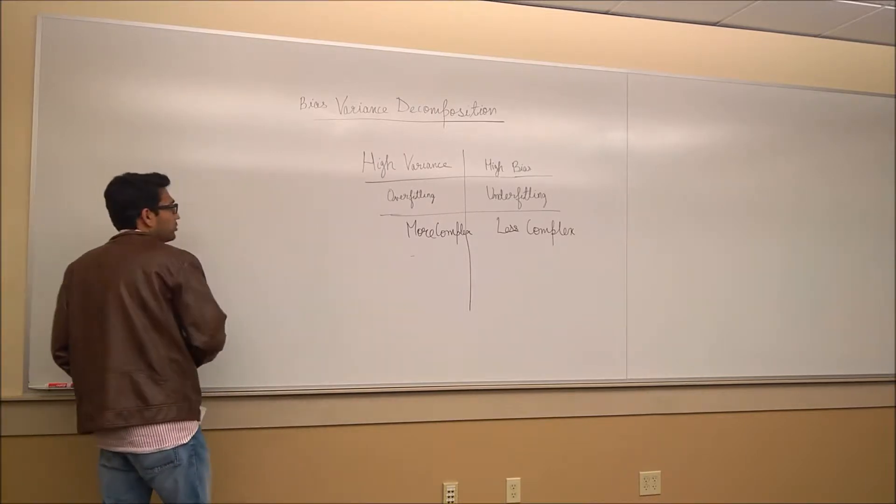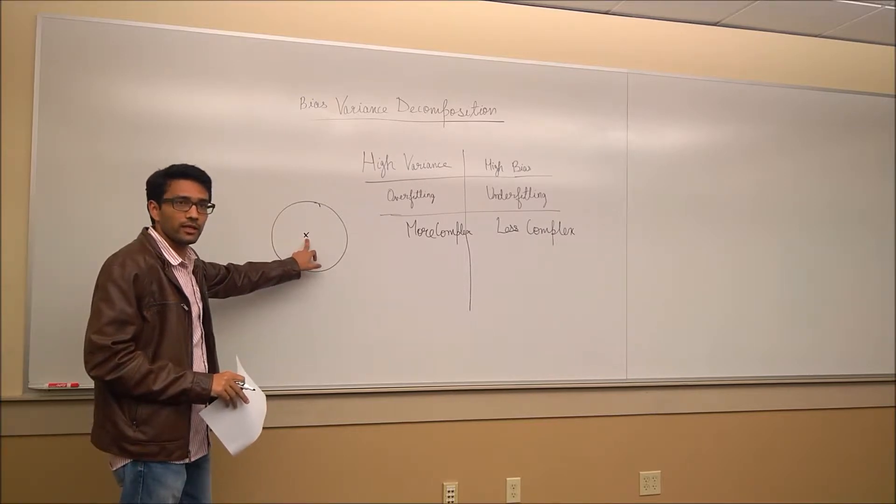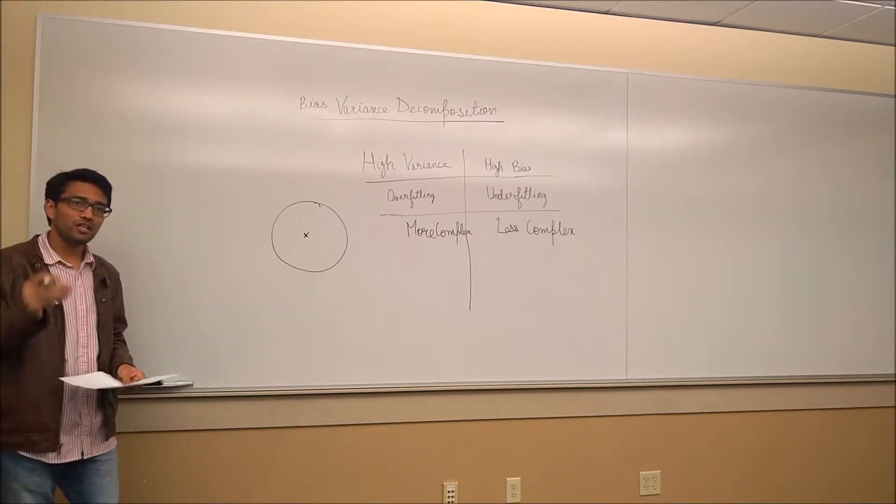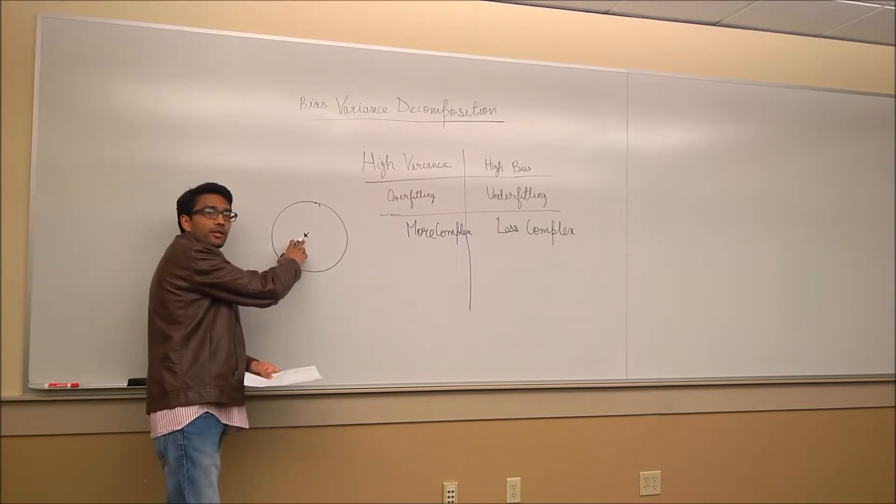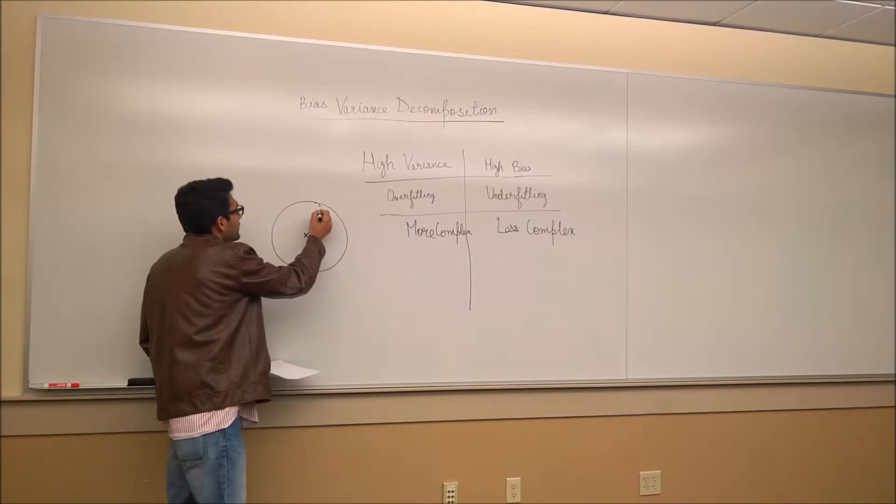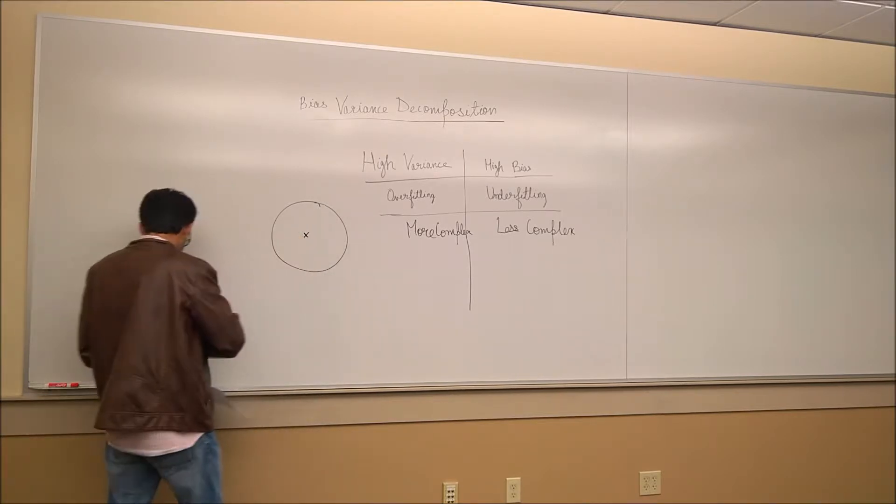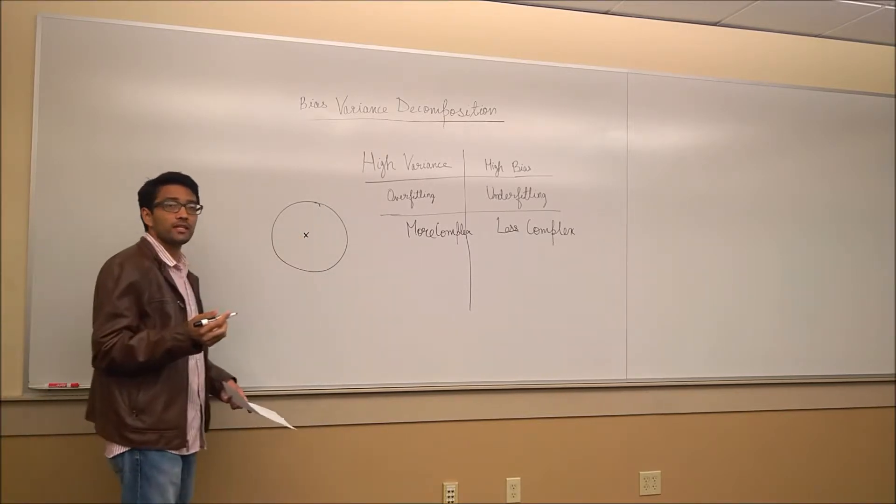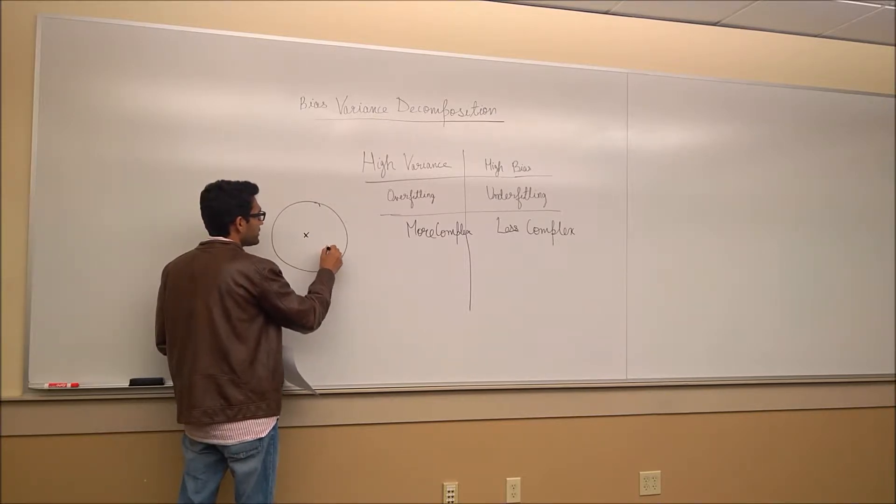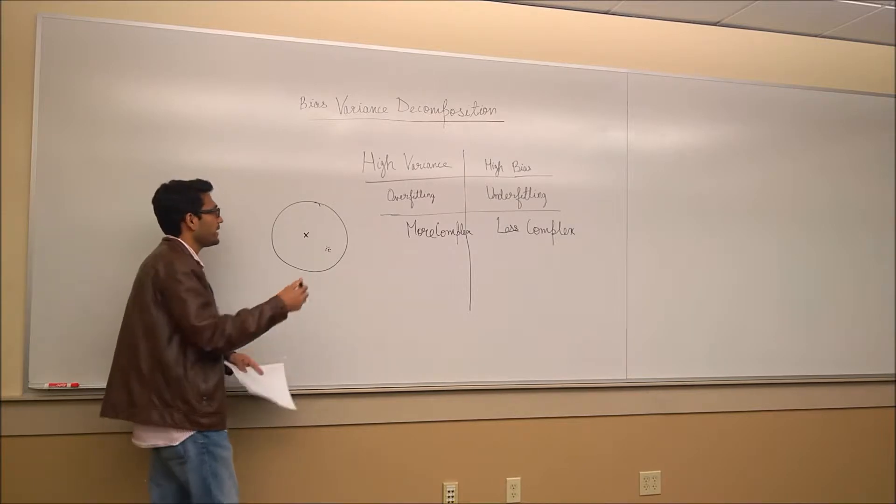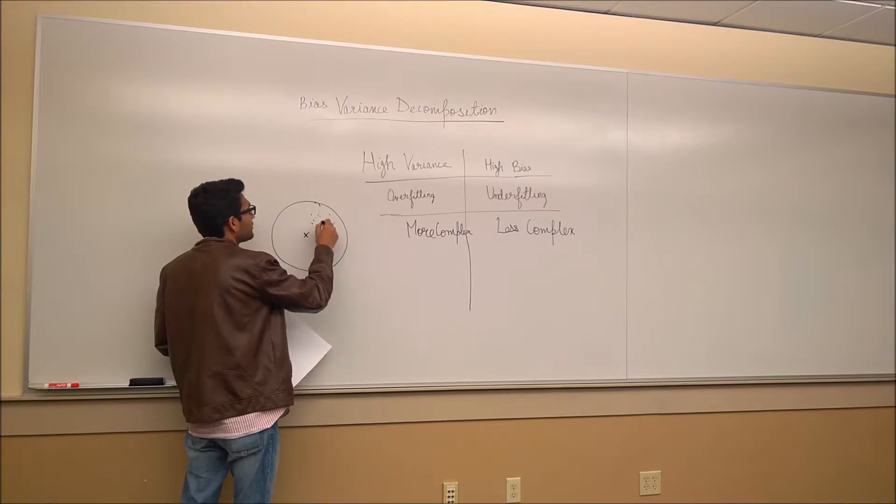There are many ways to get a mental picture of this. Say I have to hit this target. Now as per my definition of bias, bias is on an average, how close do I get to the target. This point has a high bias. This point has a low bias. Versus what variance would mean is that if my predictions are all concentrated in a small place, it is low variance.